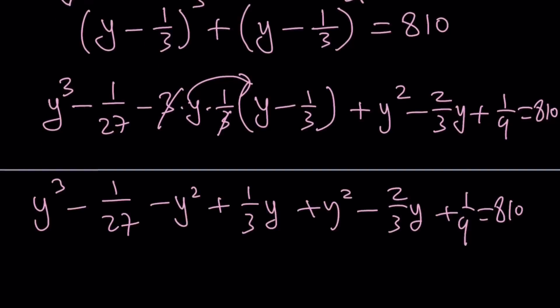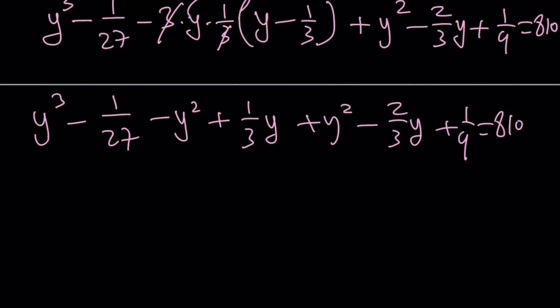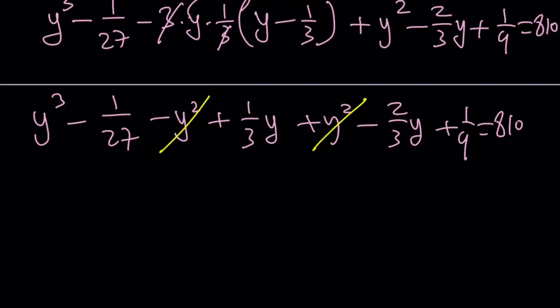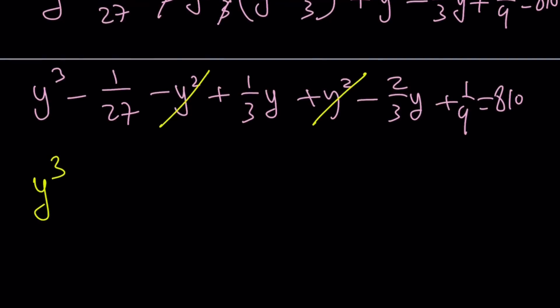Large numbers and fractions together. When you distribute, you get y cubed minus 1 over 27, and then minus y squared plus 1 over 3y, and then plus y squared minus 2 over 3y plus 1 ninth equals 810. Notice that y squared cancels out - that was the goal. We got rid of the quadratic. Now we have y cubed minus 1 third of y, plus 2 over 27 equals 810.